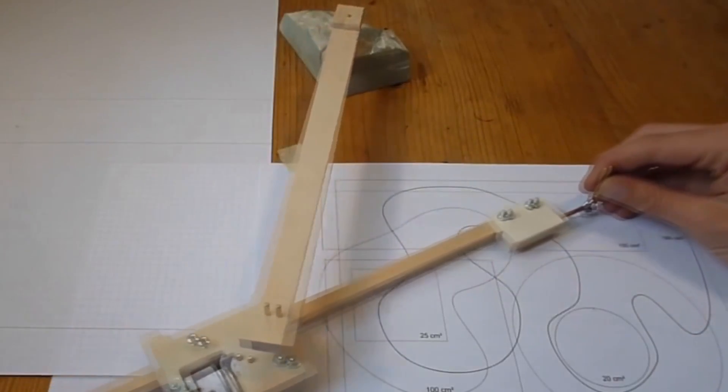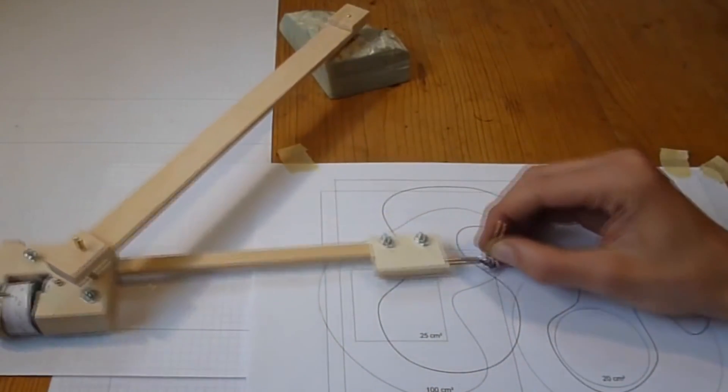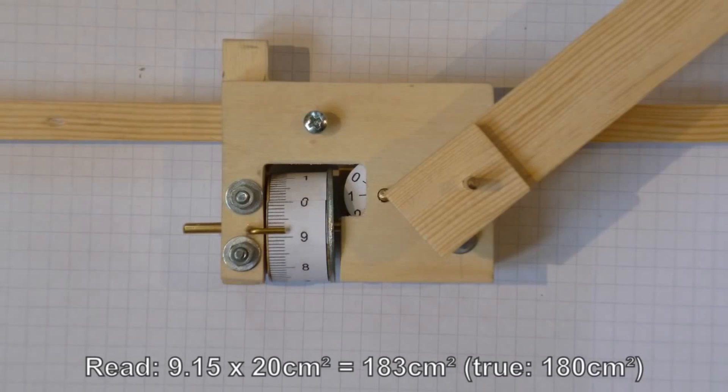A planimeter is a prime example of an analog device. Essentially the planimeter measures the area of closed regions. You can take any arbitrary closed region and the planimeter will calculate its area.